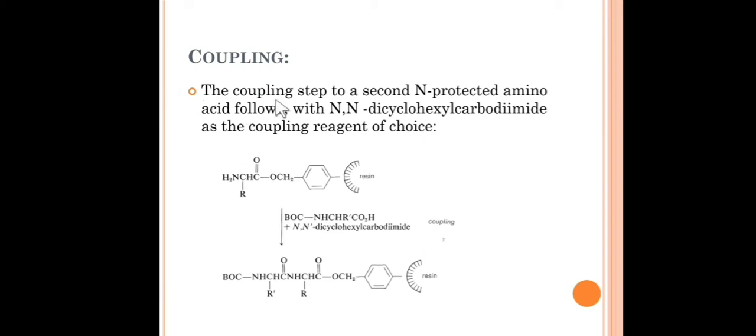The coupling step to the second N-protected amino acid by N,N-dicyclohexylcarbodiimide, that is DCC or DCCI. DCCI coupling helps us to couple this NH2 and the COOH. This COOH, again this amino acid is BOC-protected. This COOH now coupled with the NH2 and we get the peptide bond between this COOH and NH2. This is the coupling step.